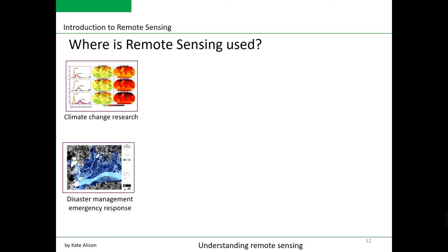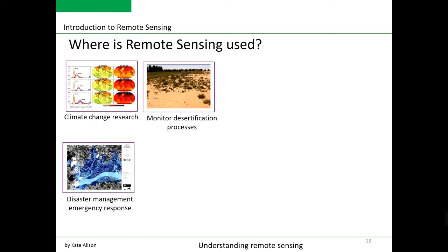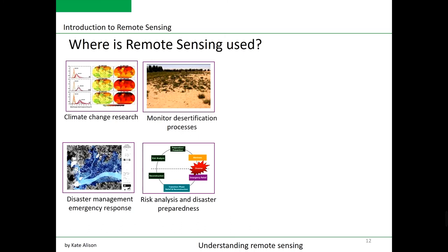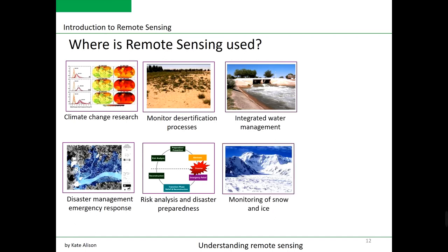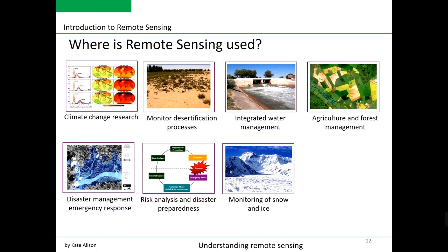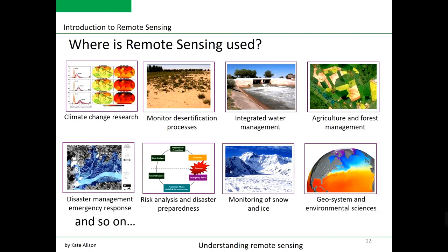Remote sensing is used for disaster management and emergency response — for example, mapping earthquake damages and tsunami impacts as shown in this lecture. We can also use remote sensing to monitor desertification and land degradation, map soil quality, and support risk analysis and disaster preparedness. Further applications include irrigated water management, snow and ice cover monitoring, agricultural and forest management, and geospatial and environmental sciences.